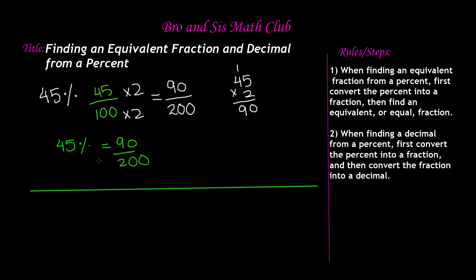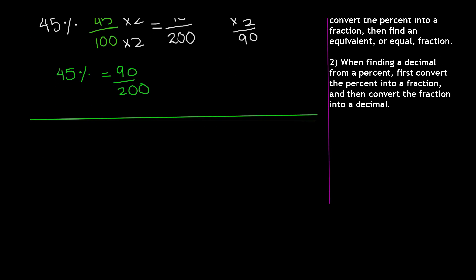Now let's move on and find a decimal from a percentage. So now let's read our second rule, which says, when finding a decimal from a percent, first convert the percent into a fraction and then you can convert the fraction into a decimal.